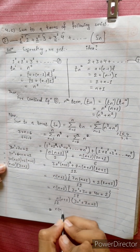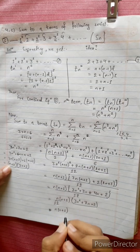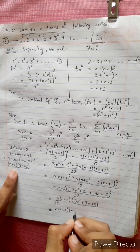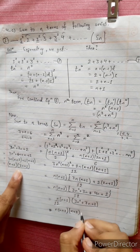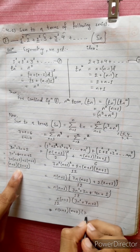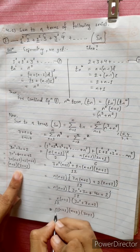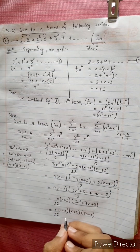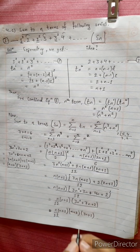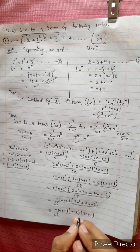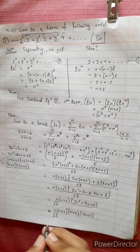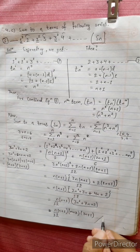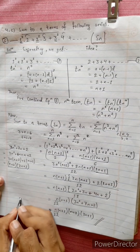So the final answer is n(n+1)(n+2)(3n+1) divided by 12. Let's verify: 3n plus 1, n plus 2, n plus 1, n. Write the answer.